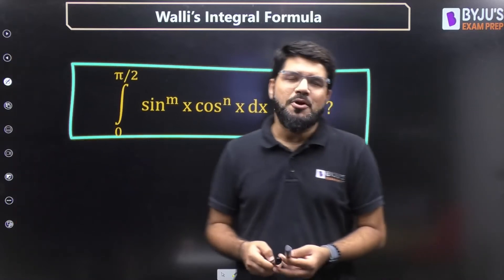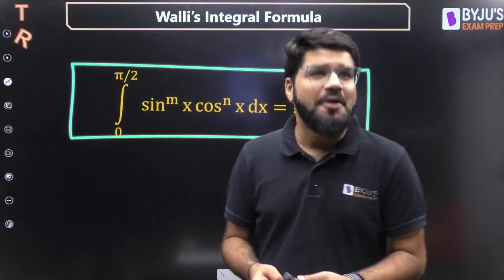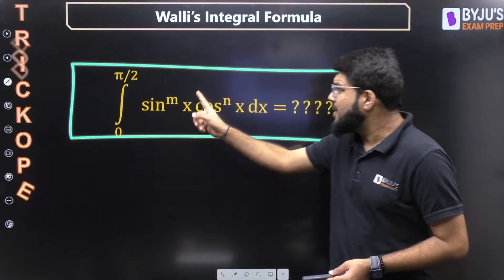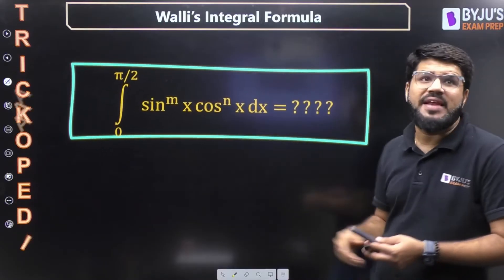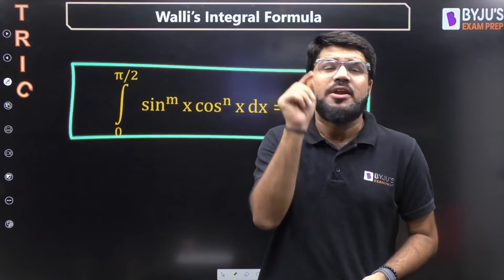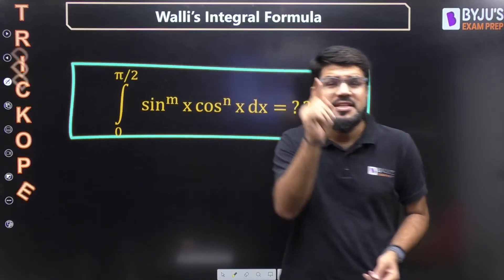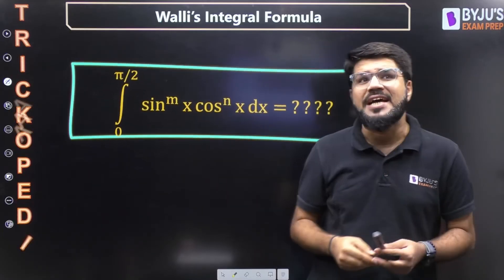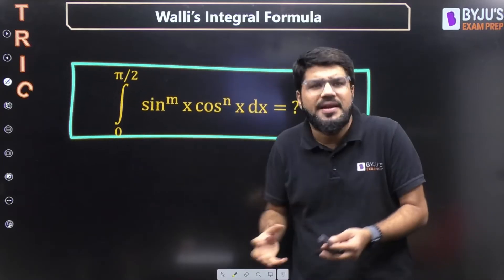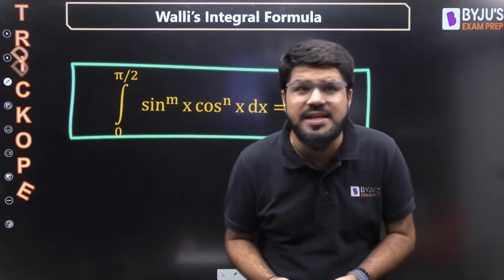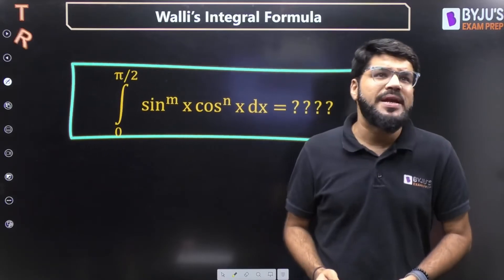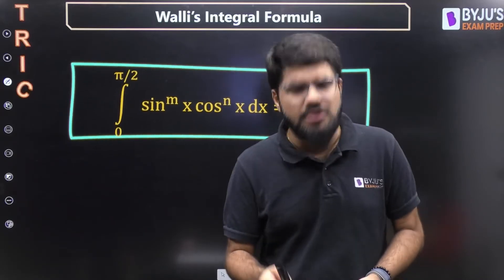Hello students, welcome to Trichopedia, the dictionary of tricks. An integral of the form from 0 to π/2 of sin^m(x) cos^n(x) dx is an important one — important directly for questions and also for your engineering core subjects. I have seen that students start solving it by trigonometric identity, which is going to be a lengthy process. So Walli's integral formula is the simplest way to deal with this particular problem.